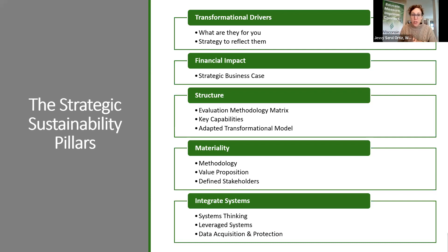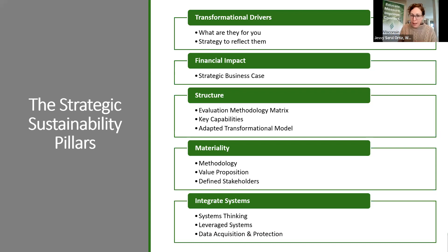The second pillar is financial impact. Sustainability makes business sense, but don't chase things that don't make business sense to your organization unless there's value for it. Understanding the financial implications can really help build the strategic business case. They have to align with the way your company does business — getting your CFO, COO, and CEO engaged really helps with strategic alignment. Structure is how you organize sustainability within your overall organization by understanding your core competencies — both organizational and personnel — and how to use that structure to drive transformation.